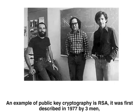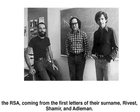An example of public key cryptography is RSA. It was first described in 1977 by three men. The RSA coming from the first letters of their surnames: Rivest, Shamir, and Adleman.